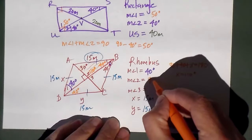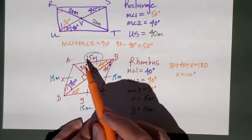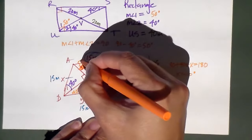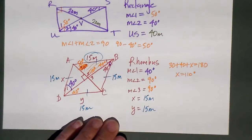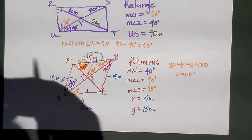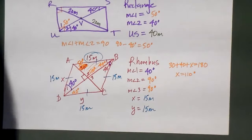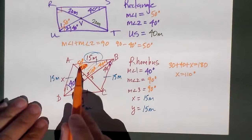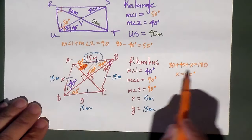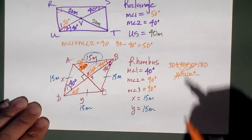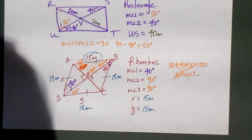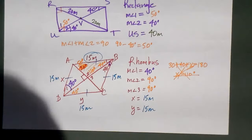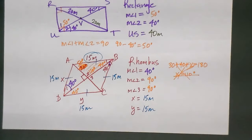Angle two and angle three should both be 90 degrees — that has to be 50 degrees because those two angles must equal 90 since the diagonals are perpendicular in a rhombus. That's how you know if you've got the right numbers. Angle two and angle three: you should immediately say 90 degrees, because the diagonals are perpendicular in a rhombus.